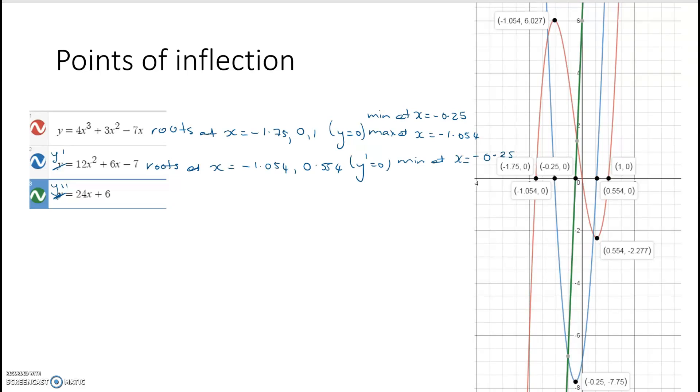Okay. Oops, that was a slight error up here. The minimum at x is, x is equal to 0.554. Okay. Carrying on, let's look at the second derivative. It's now a straight line, and it has a root at x equals negative 0.25, and that's where the second derivative is equal to 0.